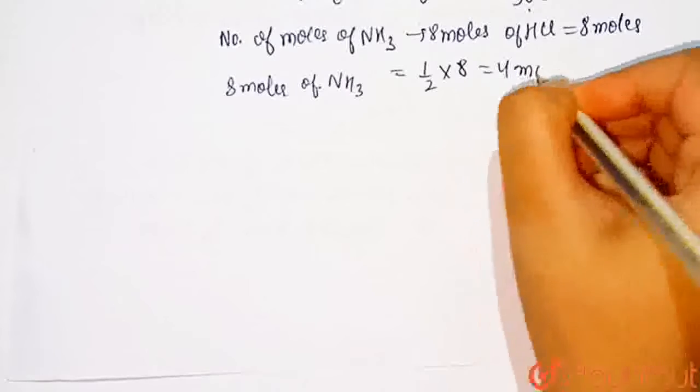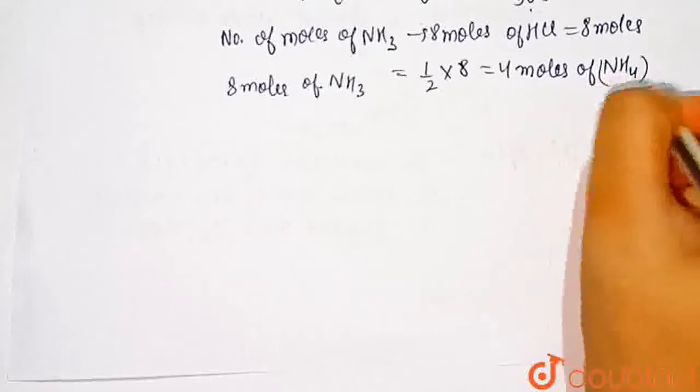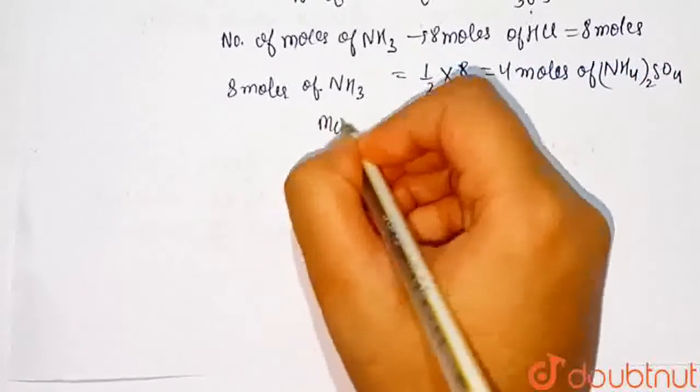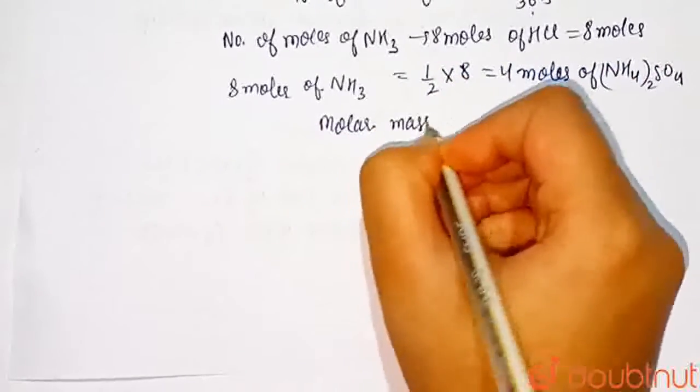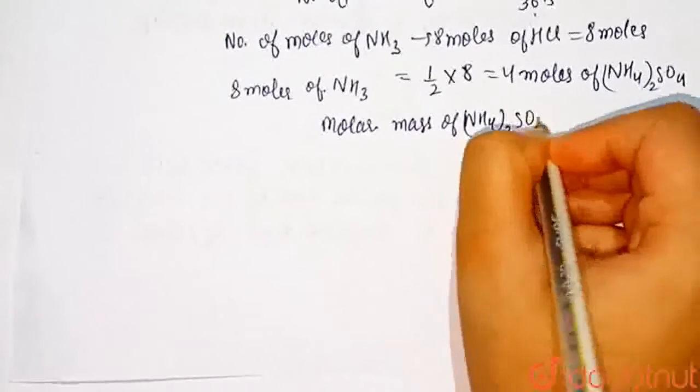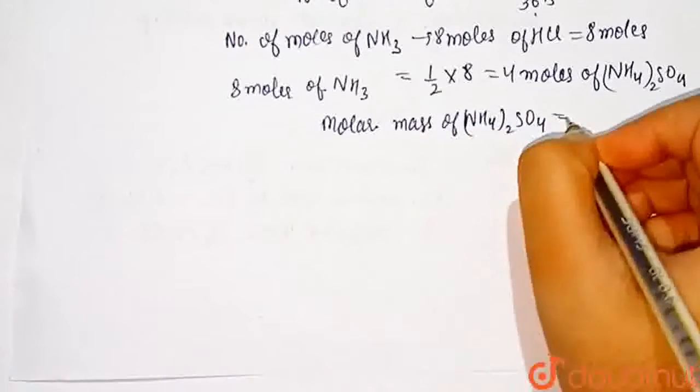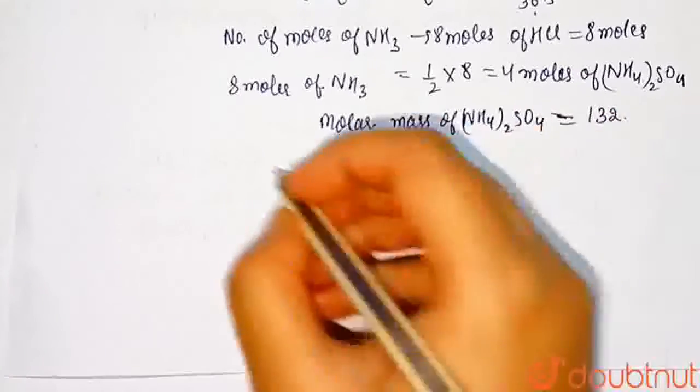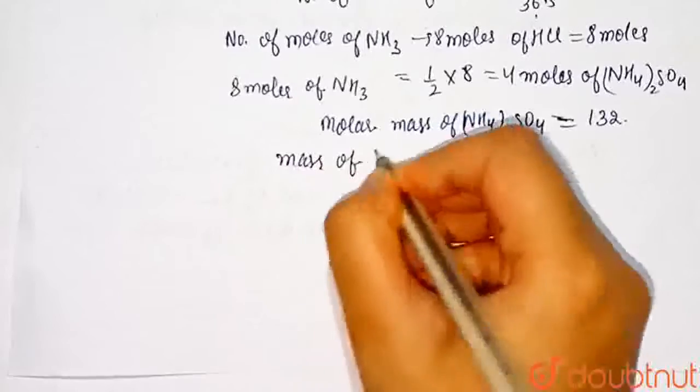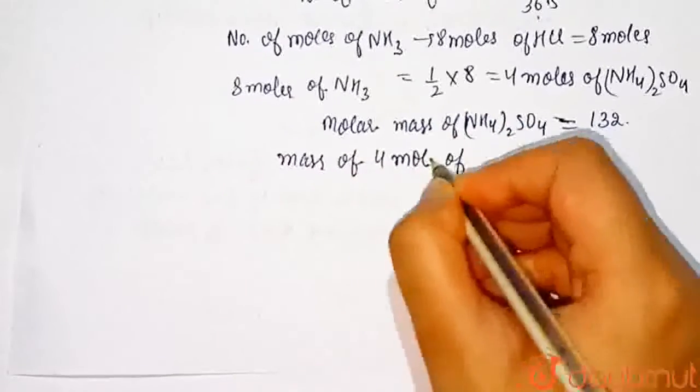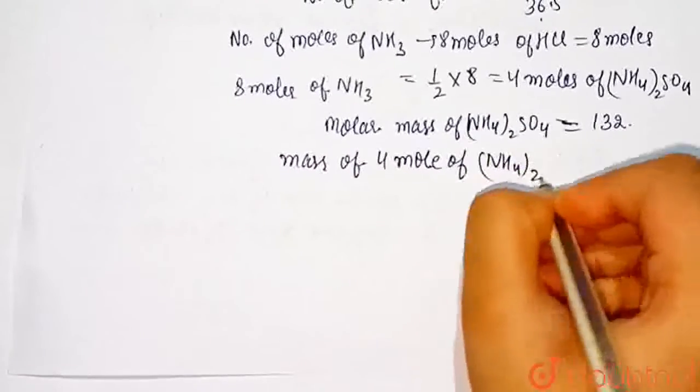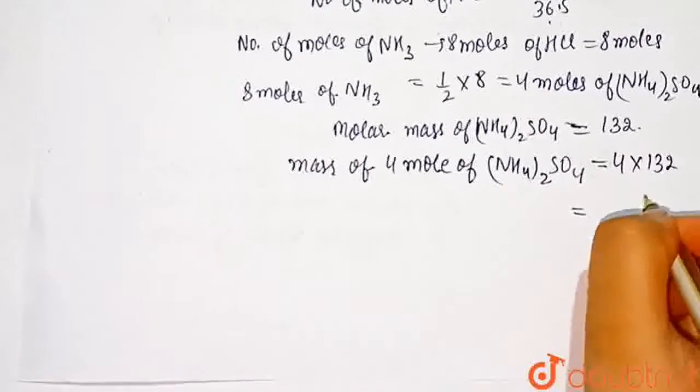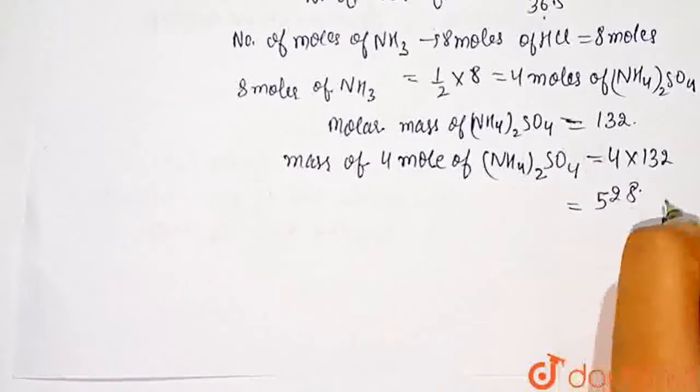Now molar mass of ammonium sulfate equal to 132 gram per mole. Now mass of 4 moles of ammonium sulfate equal to 4 into 132, which is equal to 528 gram.